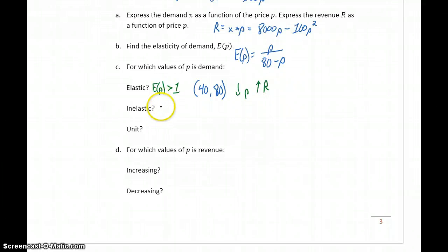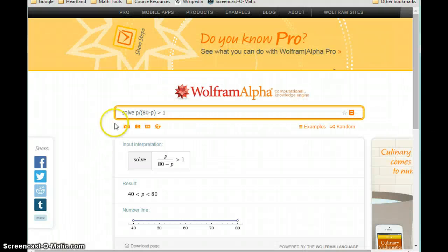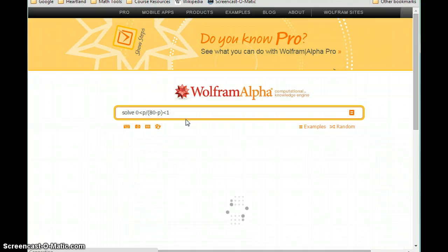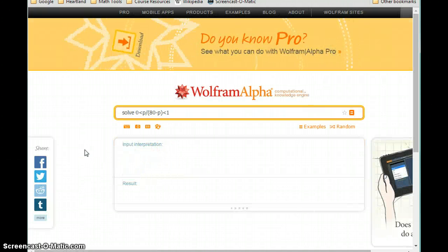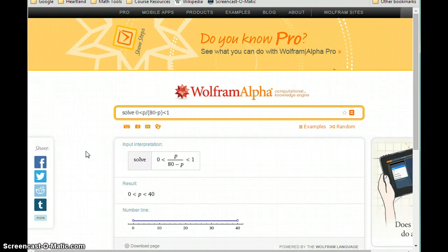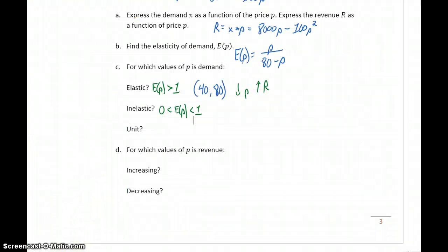Similarly, where is demand inelastic? So that means that elasticity is between 0 and 1. So now we can update our expression to say solve 0 is less than our elasticity function is less than 1. We're trying to find values of p so that our elasticity function will be bounded between 0 and 1. In this case, we get values between 0 and 40. So demand will be inelastic if our price is somewhere in the range from 0 to 40, and this would mean that if we increase price, we'll see an increase in revenue.